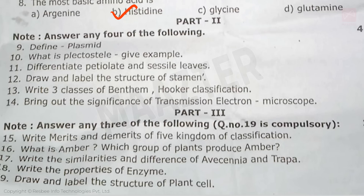Next, two more questions. Now for the two-mark section, four questions are attempted. First, define plasmid. What is vascular tissue? Give an example. Next, differentiate petiolate and sessile leaves. Then, draw and label the structure of a stamen. Next, write the three classes of Bentham and Hooker's classification. Next, bring out the significance of the transmission electron microscope.